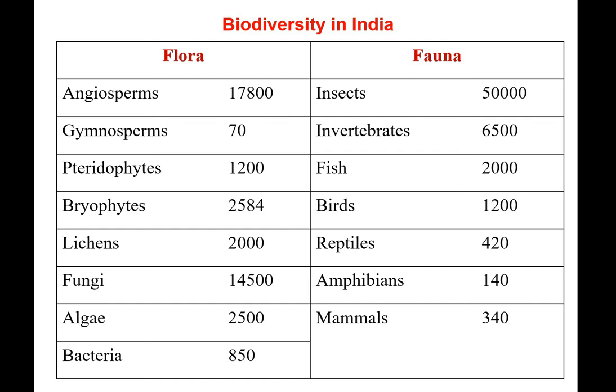Regarding biodiversity in India with respect to flora: angiosperms constitute 17,800 species, gymnosperms 70, pteridophytes 1,200, bryophytes 2,584, lichens over 2,000 species, fungi 14,500, algae 2,500, and bacteria 850 species.